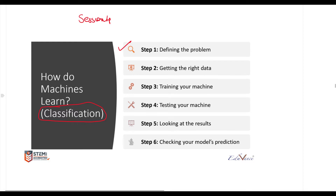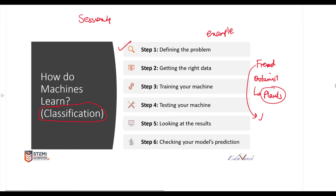Step number one for us is defining the problem. Let us take an example. Let's say you have a friend who is a botanist — a botanist is a person who studies plants — and let's give her a name called Jane. Jane is doing research on a particular type of flower.